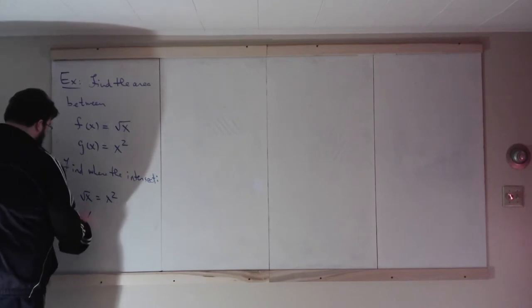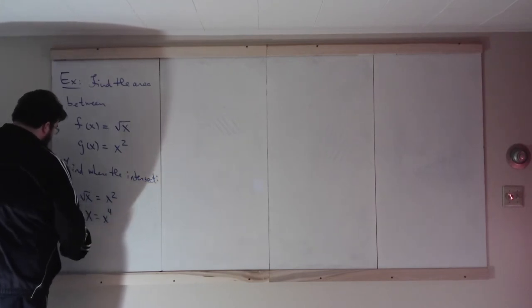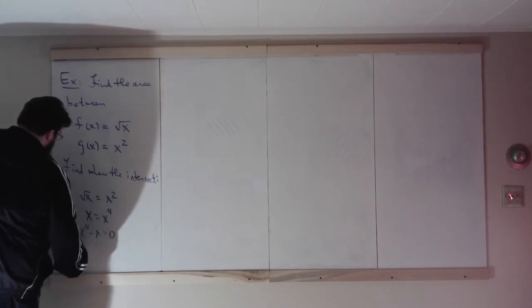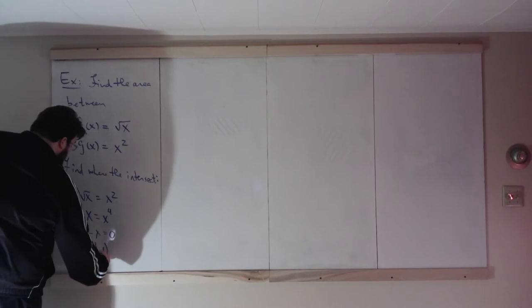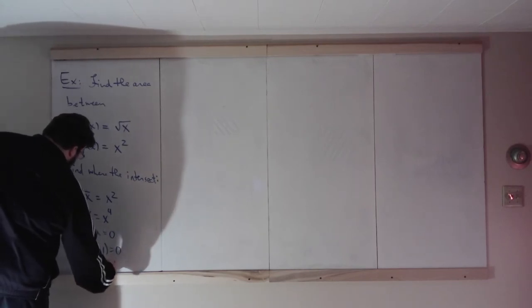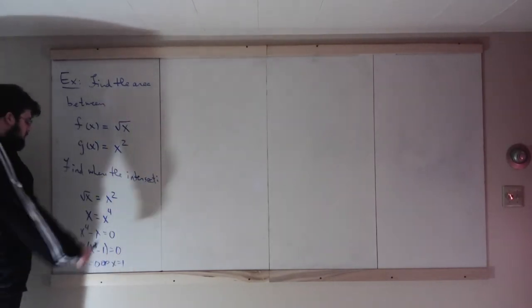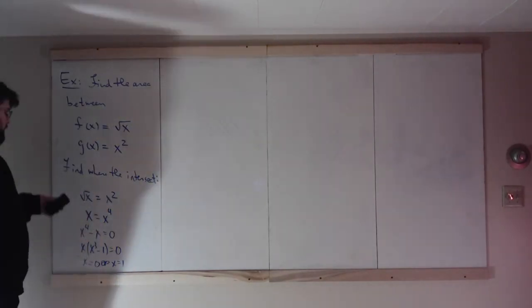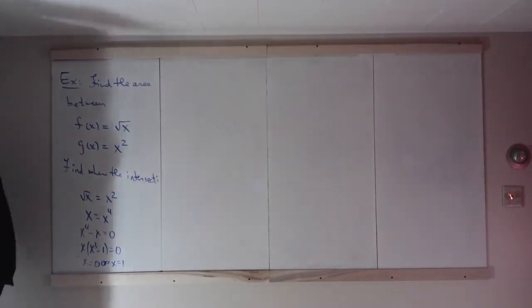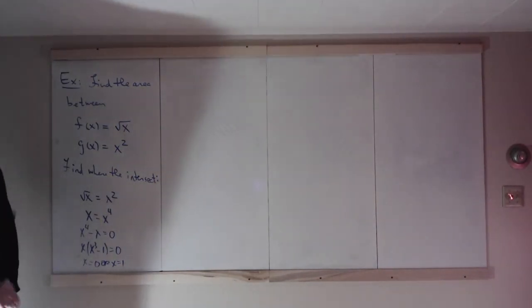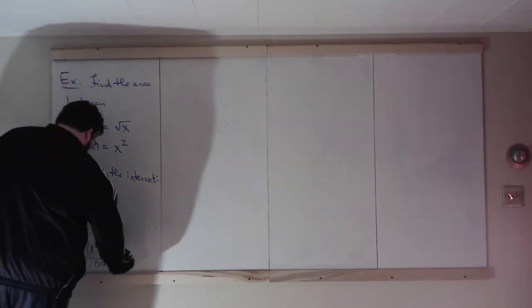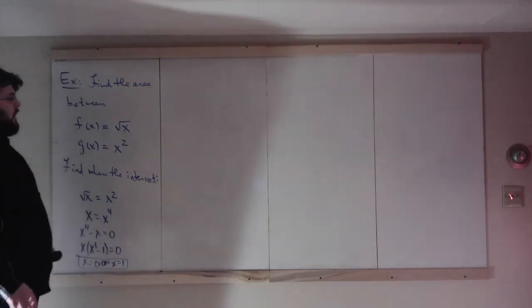Solve this for X. I'll square everything first, so you get X equals X to the 4, X to the 4 minus X equals 0, X times X cubed minus 1 equals 0, X equals 0 or X equals 1. An observation you could have made on the second line, but you could go through all the algebra, and in general you would have to. So these functions intersect at 0 and at 1.